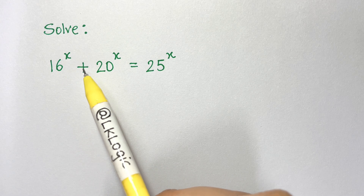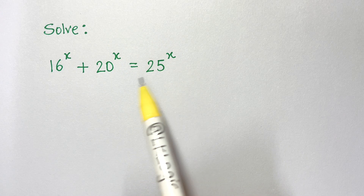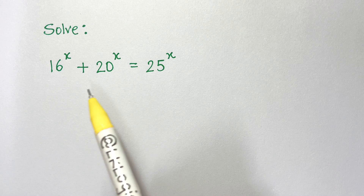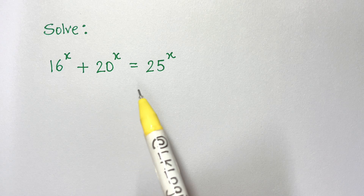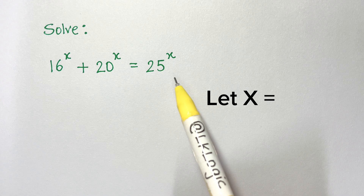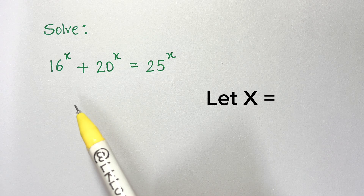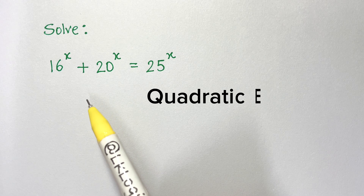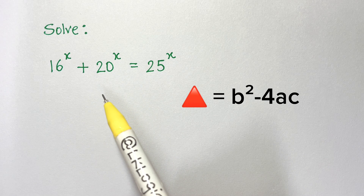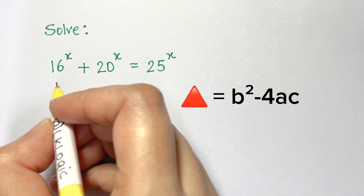Solve 16 to the power of x plus 20 to the power of x equals 25 to the power of x. Have you solved this equation? It was not easy — a lot of elements are at stake. Before the video starts, I'll check them out for you. At some point I'm going to make a change of variables, do some substitutions to get a slightly simpler equation, and then solve a quadratic using the discriminant delta.